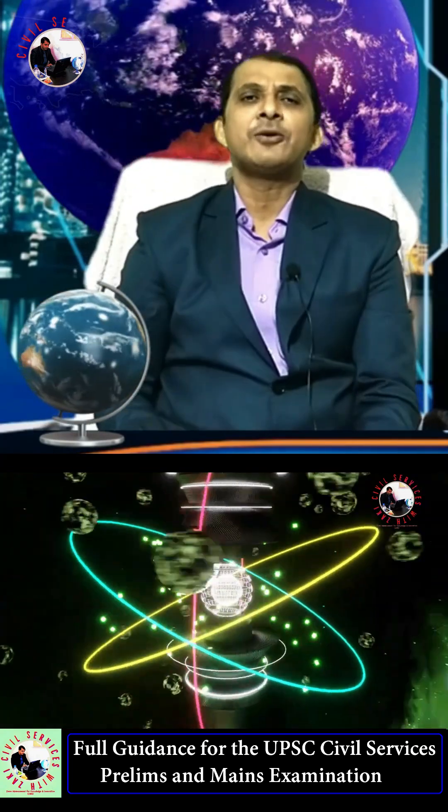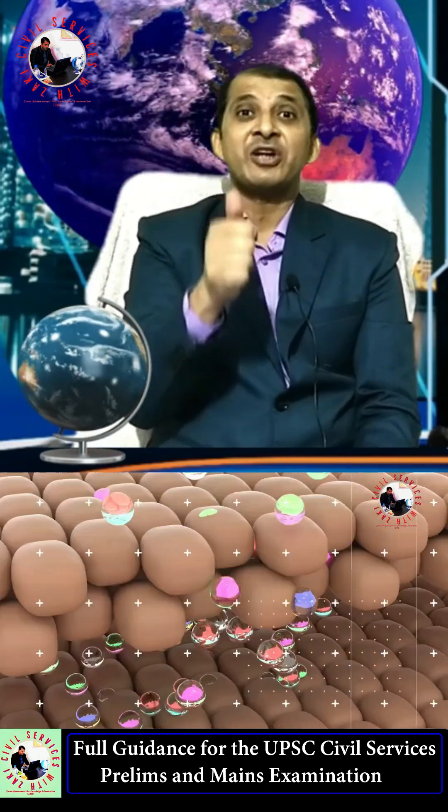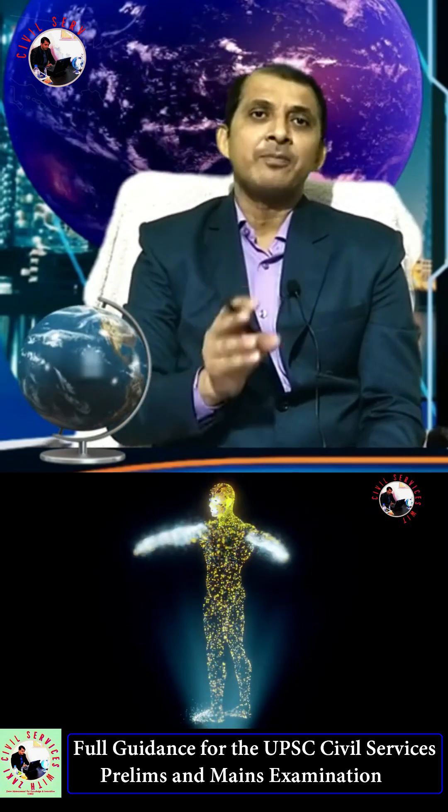The Sun produces energy through nuclear fusion, which is one of the most important sources of neutrinos. If you hold your thumb up toward the Sun, about 60 billion neutrinos pass through it every second.